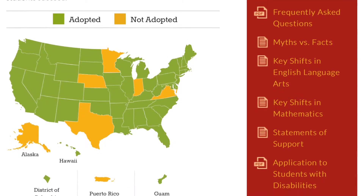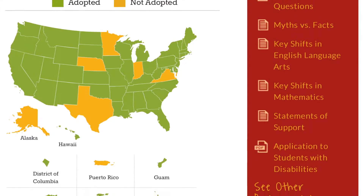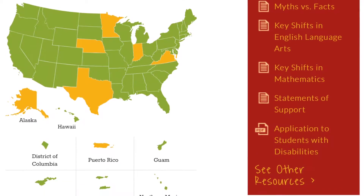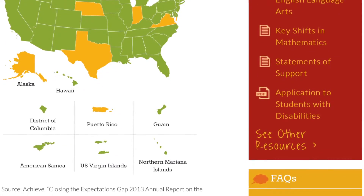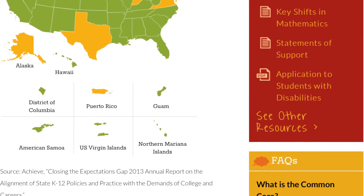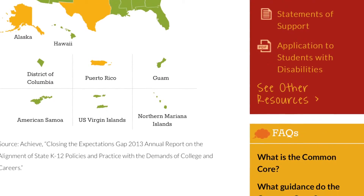Forty-four states, the District of Columbia, four territories, and the Department of Defense Education Activity have adopted the Common Core state standards.